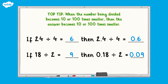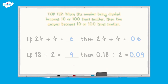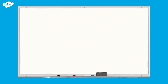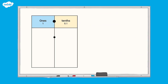As well as using mental strategies, we can also use practical resources to help us find the answer when dividing decimals by integers. Let's look at how we can use equipment to check our answer to 4.8 divided by 4. We will use a place value chart and a part-whole model to find the answer.